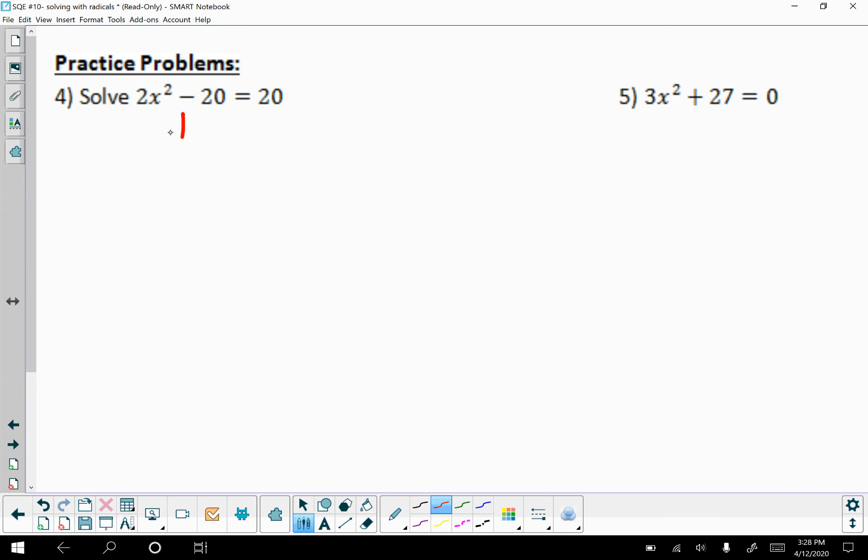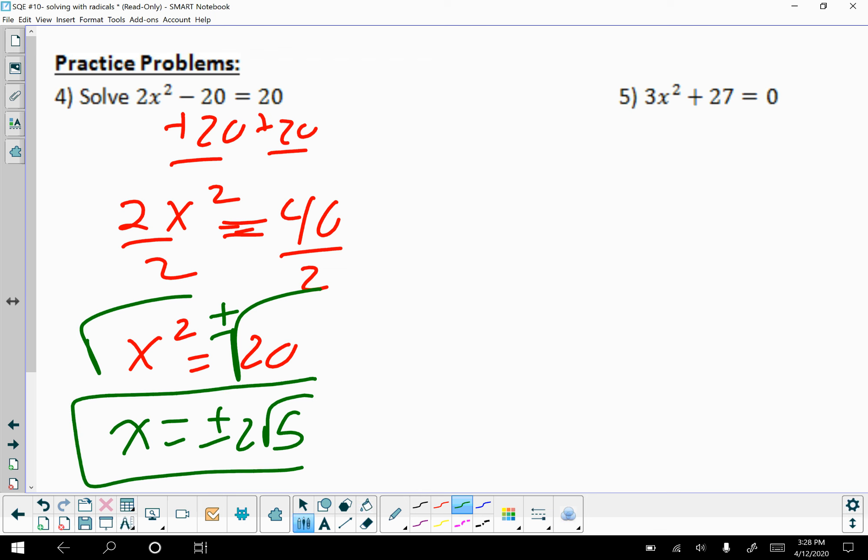Okay, so let's go with this. Add 20. 2x² = 40. That's 20 plus 20. Divide by 2, divide by 2. x² = 20. Didn't we just work this one out? Don't forget the plus minus. Plus minus 2√5. Because remember, 20 breaks down to 4 times 5. 4 is the biggest perfect square.